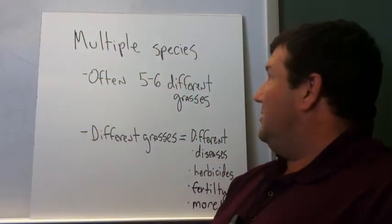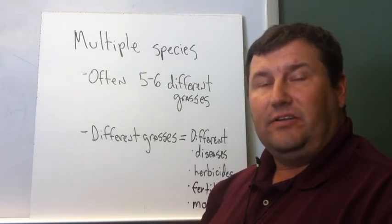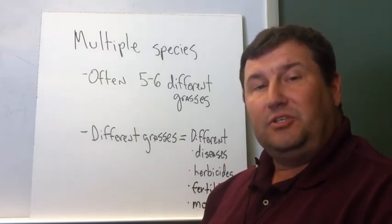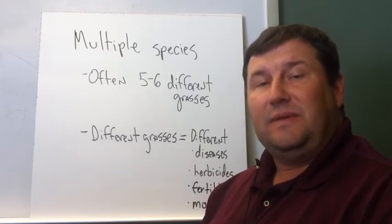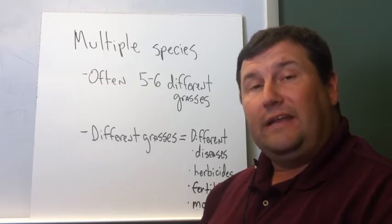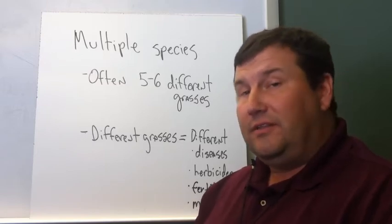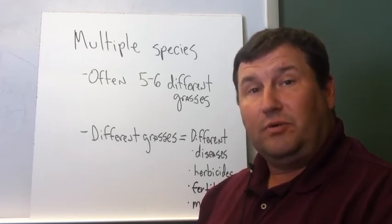The first one is that oftentimes multiple species are involved in identifying turf grasses. When we come into an area that has a bunch of grass, many times there's as many as five to six different species that are located in that particular sward, and if we can't identify which grass is which, then it's very difficult for us to be able to identify the appropriate intervention strategies to resolve a particular problem.